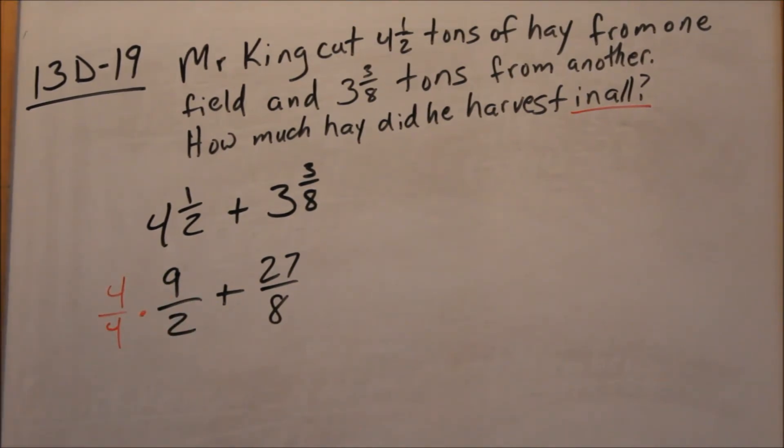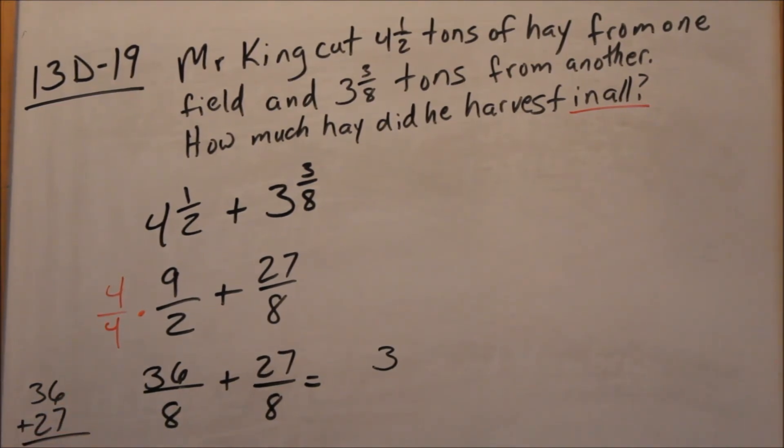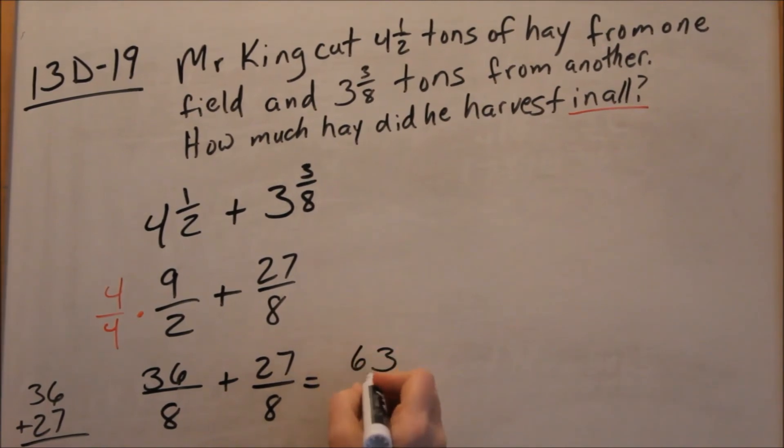So, this new fraction becomes 4 times 9, multiplying straight across, 36, 4 times 2 is 8, plus 27 over 8. When you add fractions, you only add the numerators, 36 plus 27. If you need to go off and do it to the side, that's fine. There's nothing wrong with coming over here and doing it off over here to the side. So, that will end up being 63.